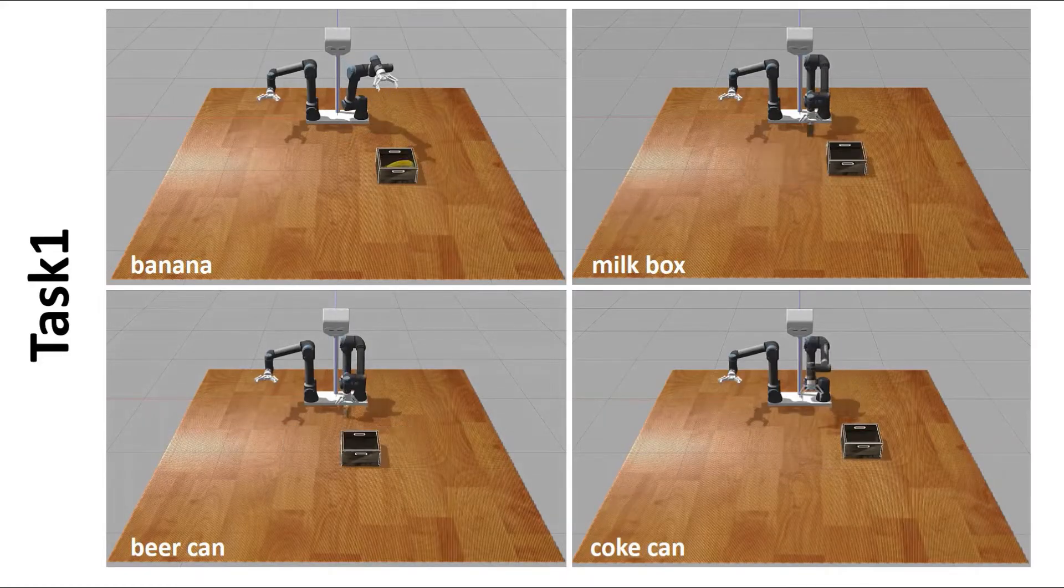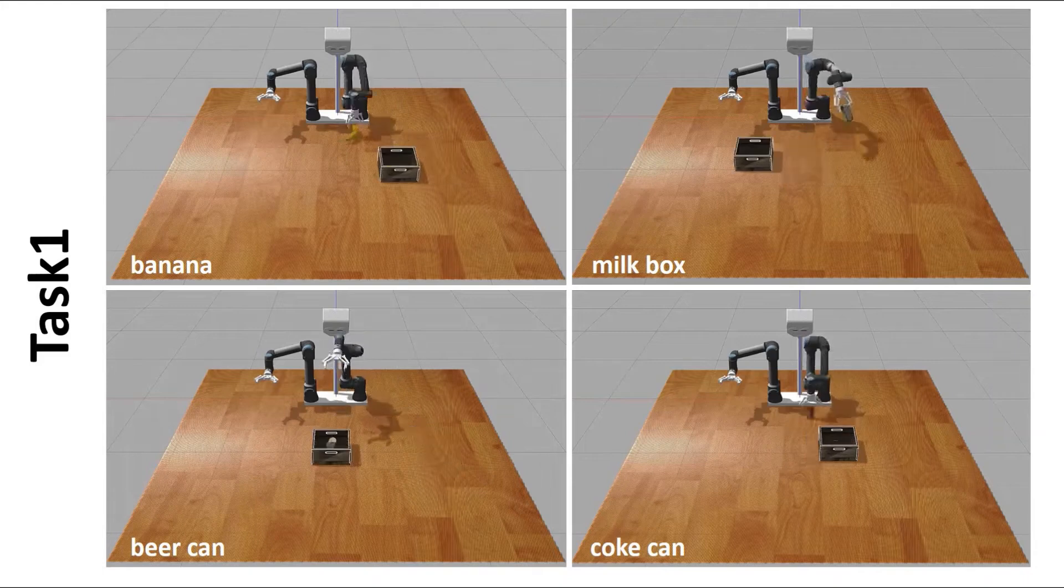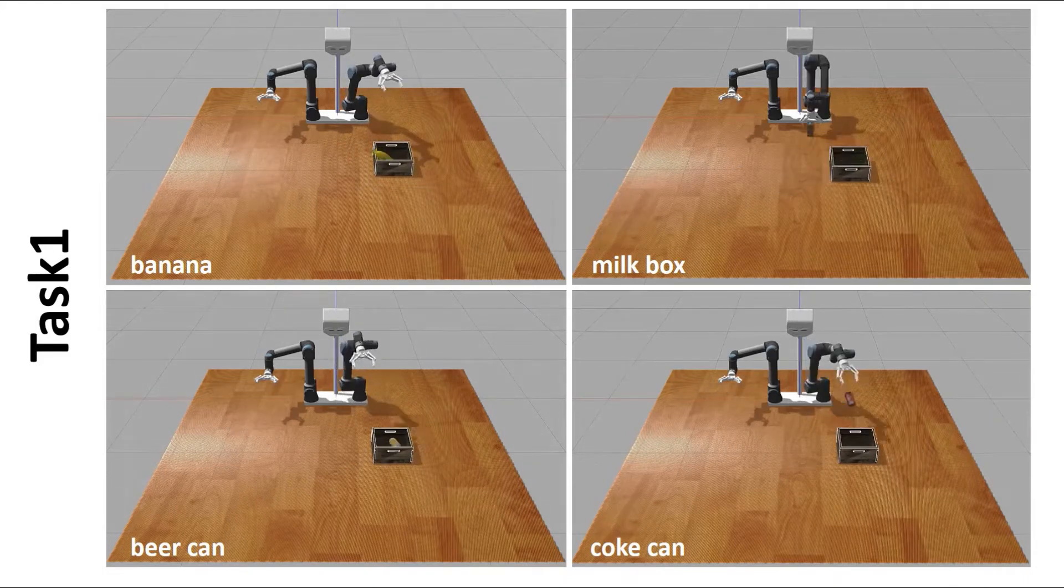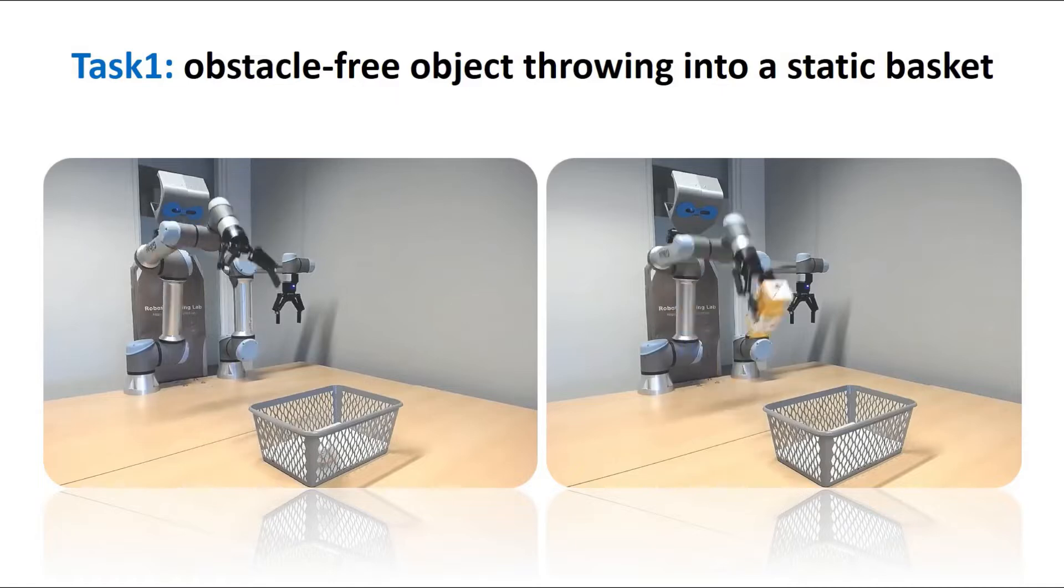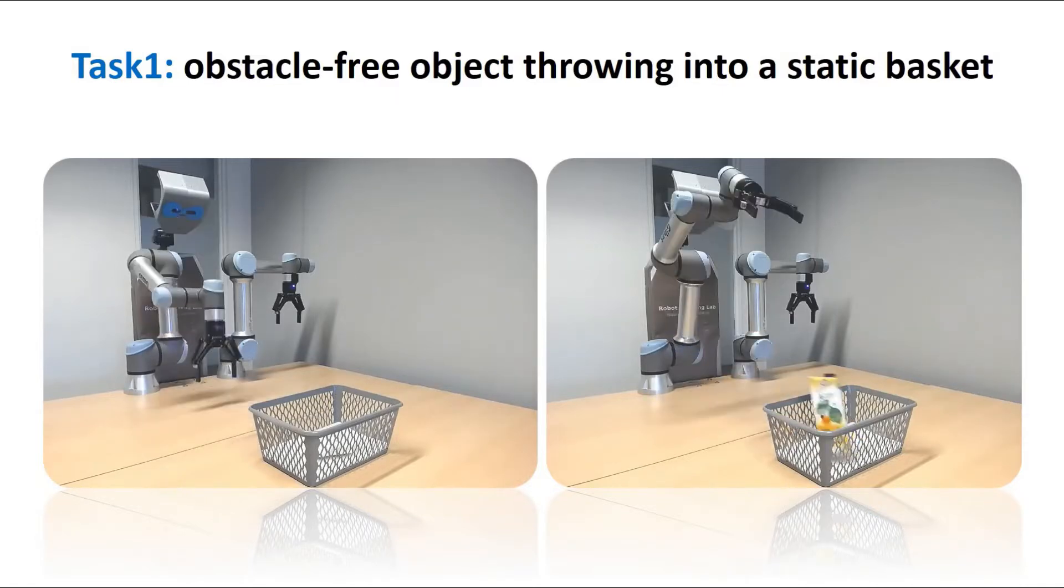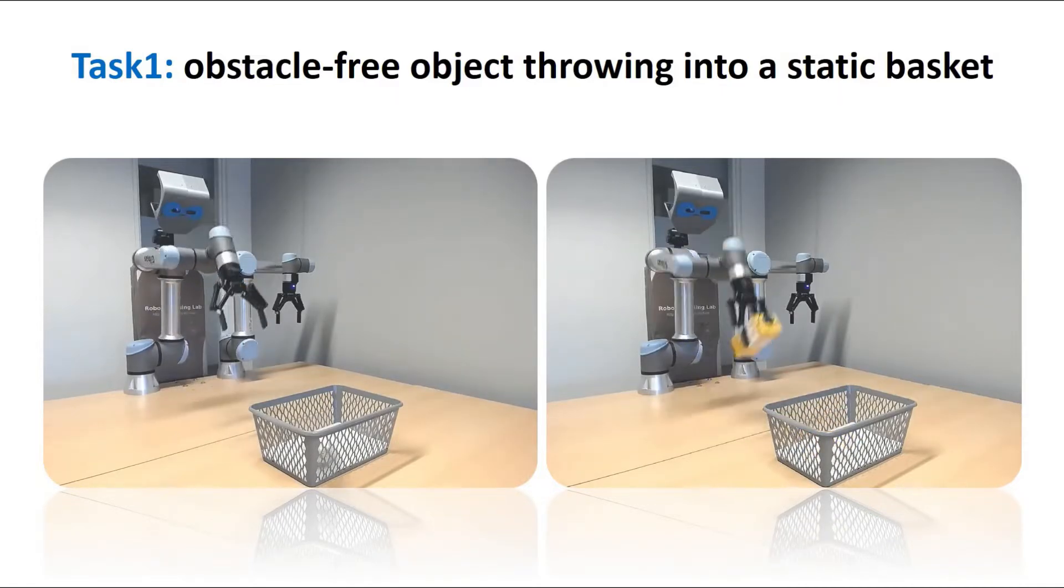As shown in these videos, we used various simulated objects with different materials, shapes, sizes, and weight. We observed that the robot with SAC policy could throw the objects into the basket successfully.